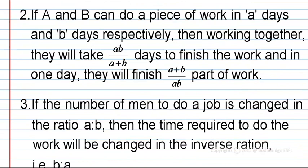The second point: if A and B can do a piece of work in A days and B days respectively, then working together they will take AB by A plus B days to finish the work, and in one day they will finish A plus B by AB part of the work. When working together, you sum up both values — for example, if A does work in 5 days and B in 7 days, you add 5 plus 7 to get the total work.